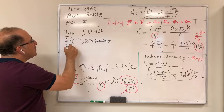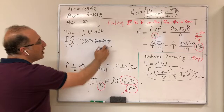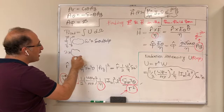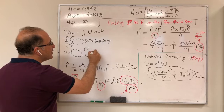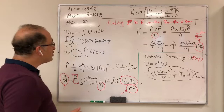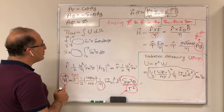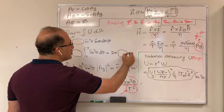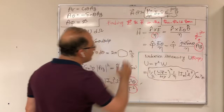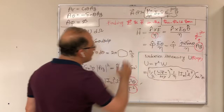Total radiated power P_rad = ∫ U dΩ, integrating over all solid angles. Since there is no φ dependency, integrating over φ from 0 to 2π gives 2π. Then we integrate sinθ · sinθ² dθ = sin³θ dθ from 0 to π, which equals 4/3. So P_rad = 2π · U_expression · (4/3), giving the total power radiated by the antenna with no θ dependency remaining.